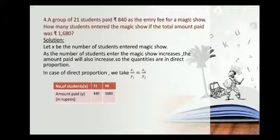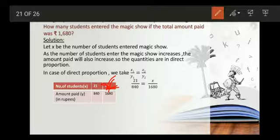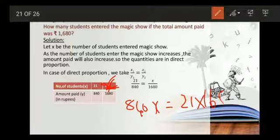Prepare a table: take number of students as X and amount paid as Y. When 21 students attend it is 840 rupees; for X students it is 1680 rupees. Substituting: 21 by 840 is equal to X by 1680. Do cross multiplication: 840X is equal to 21 into 1680.